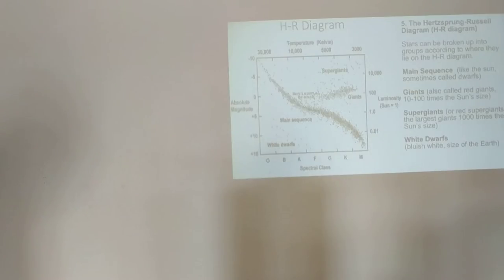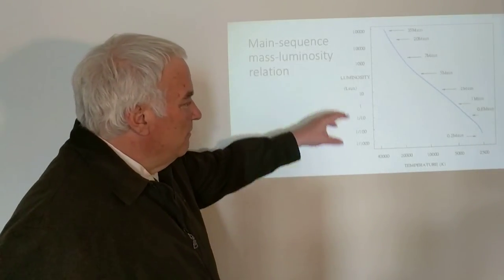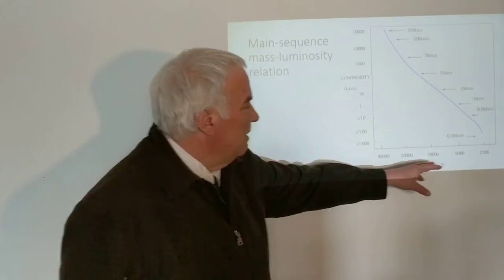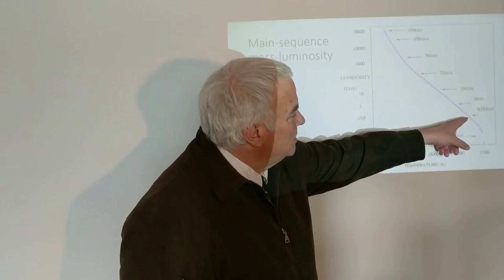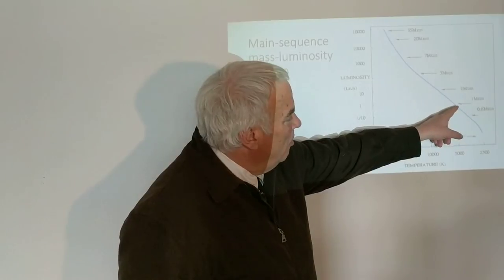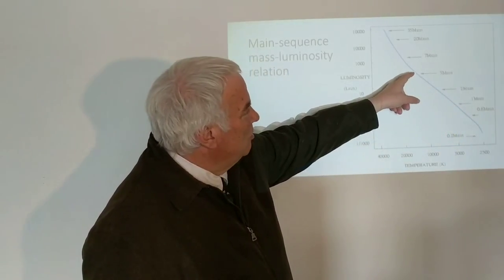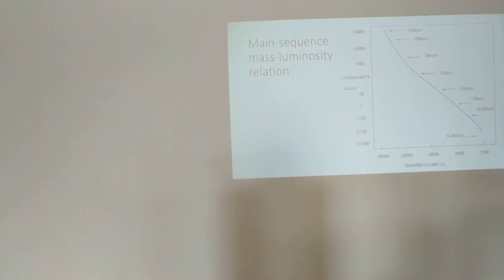Stars are plotted on the same diagram where we can plot the luminosity versus the temperature or spectral type. For the main sequence, stars are plotted here with their mass: one solar mass, two solar masses, three solar masses, up to 20 or 35 solar masses.